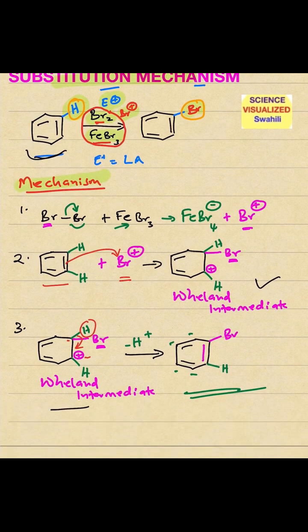The mechanism involves three steps. Step number one is formation of the bromonium ion intermediate. Br2 reacts with FeBr3 to give you FeBr4 minus, remember the minus, plus Br+.